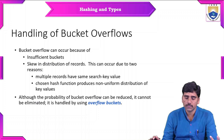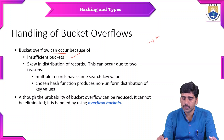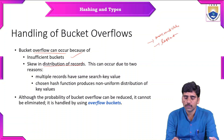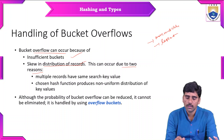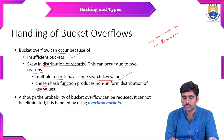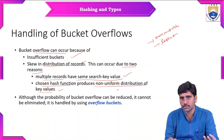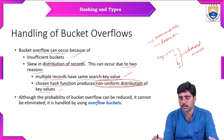Bucket overflows can occur because of insufficient buckets — that is, more number of values but fewer buckets. Skew in distribution of records can occur due to two reasons: one, multiple records have the same search key value; two, the chosen hash function produces a non-uniform distribution of key values, meaning key values are randomly distributed across all buckets.